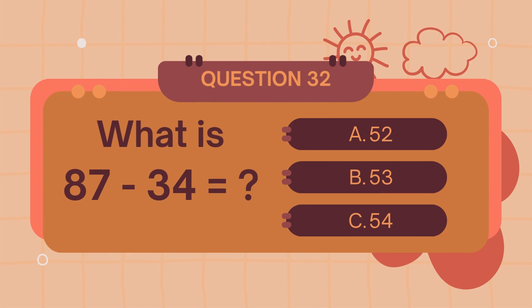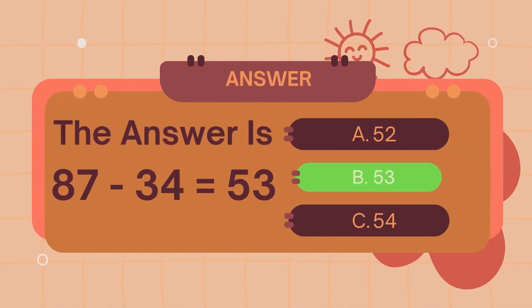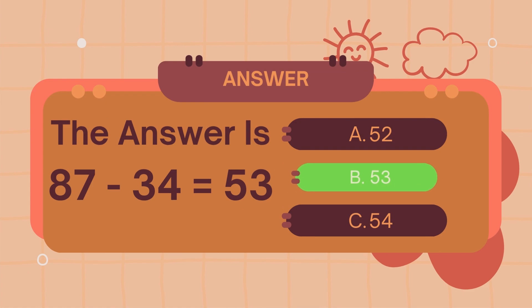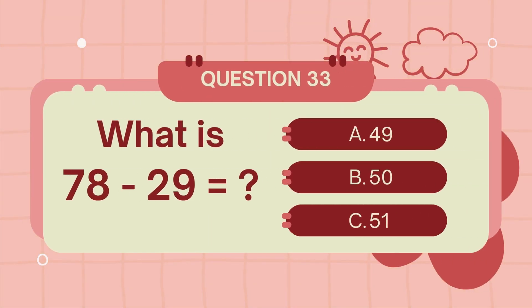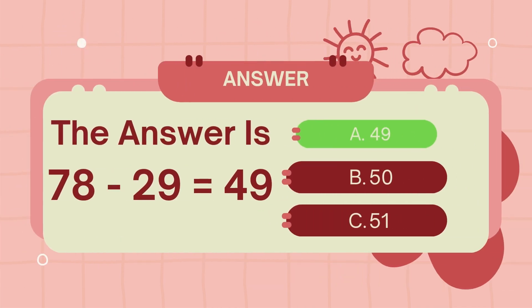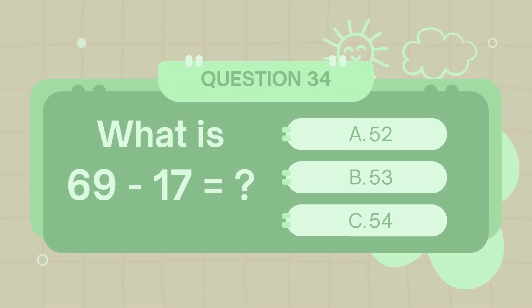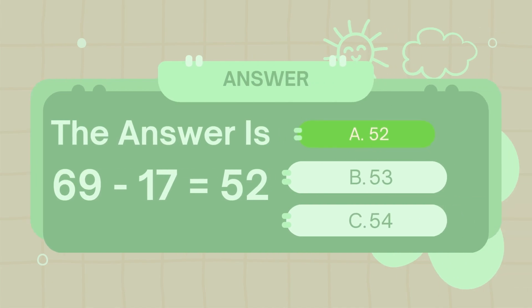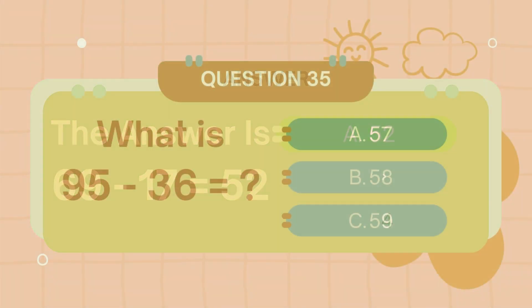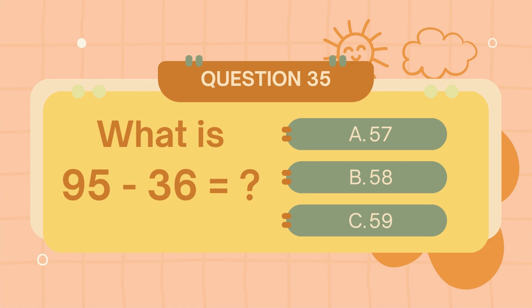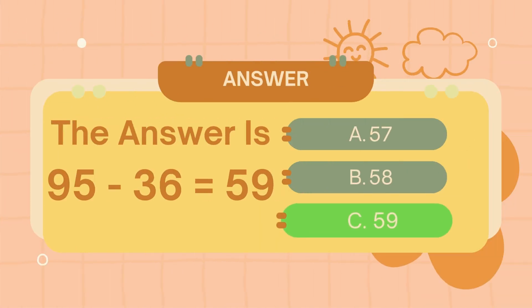What is eighty-seven minus thirty-four? The answer is forty-nine. What is sixty-nine minus seventy? The answer is forty-nine.